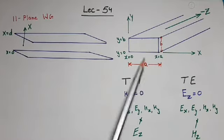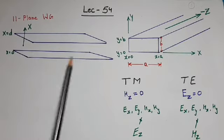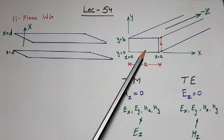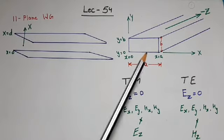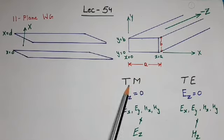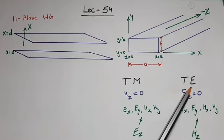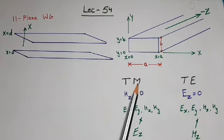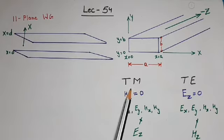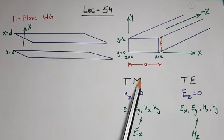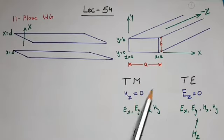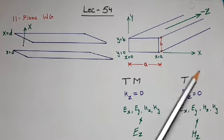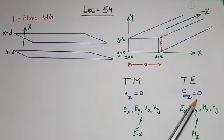To study the rectangular waveguide we use analogy with the parallel plane waveguide. In rectangular waveguide also two main modes of propagation exist: one is Transverse Magnetic (TM) and the second is Transverse Electric (TE). In TM mode the magnetic field component always remains perpendicular to the z-axis, so the magnetic field has no component in the z direction — therefore Hz equals zero. In TE mode the electric field is always perpendicular to the z-axis, so Ez equals zero.